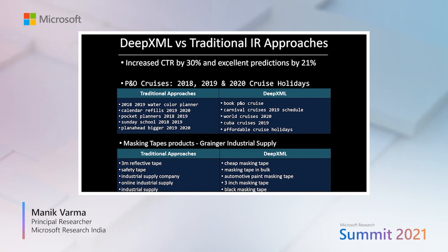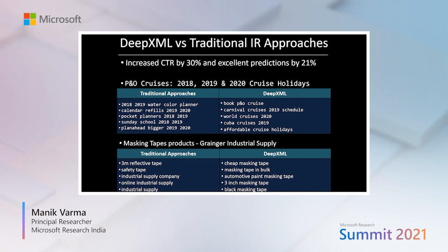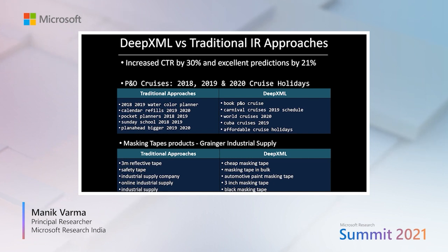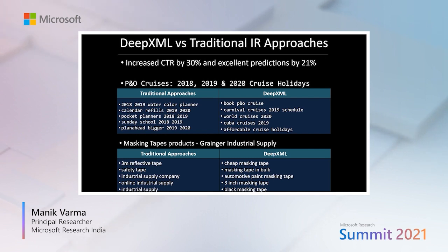Furthermore, a qualitative analysis of the inferred intents shows that DeepXML's predictions are not only much more accurate, but they are also more diverse and capture the different facets of the user's intent. Whereas traditional approaches often tend to focus on the wrong information, such as the years in the cruise example or on industrial supply in the masking tape example, and therefore altogether miss out the user's true intent. This further demonstrates the benefits of extreme classification over traditional ML, IR, and NLP approaches to search and recommendation.